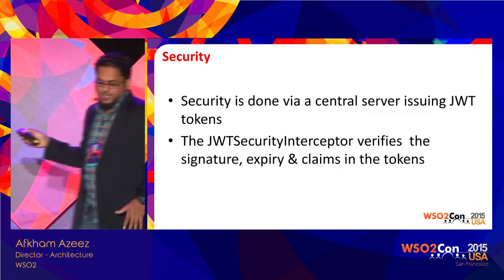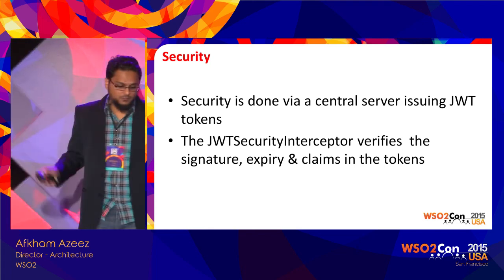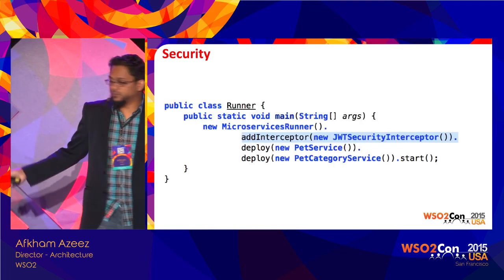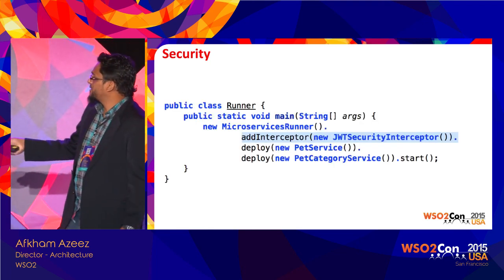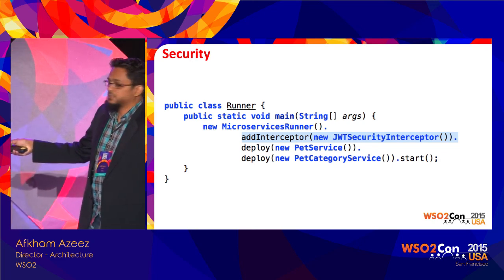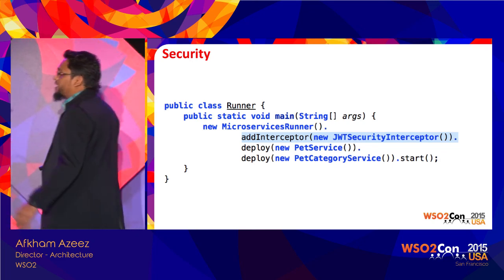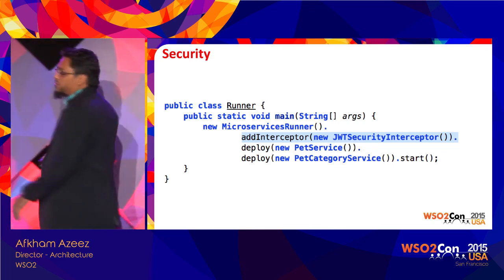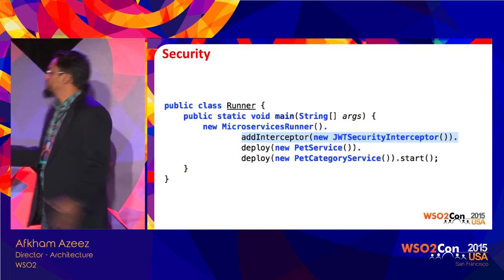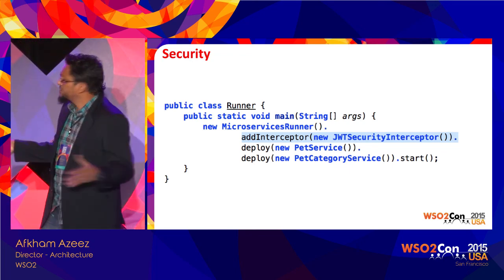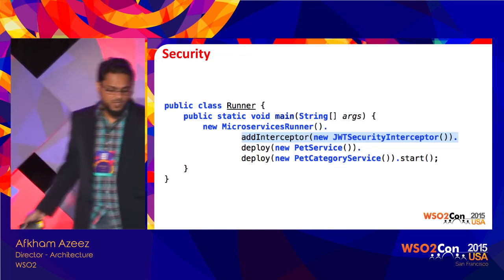For security, it's done using JWT. The way to do that is you add an interceptor. The interceptor architecture allows you to plug in your own — if you want to do SAML, you could write your SAML interceptor and plug it in.